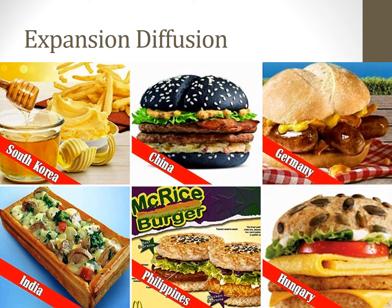McDonald's is a great example of stimulus diffusion. McDonald's continues to expand, but not every country has the same food preferences and there are cultural taboos to consider. So McDonald's makes cultural adaptations to their menu to meet local demands. McDonald's in India offers non-beef options to meet the cultural taboo against eating beef. McDonald's in Israel offers kosher restaurants. And that's just a couple of the many different menu examples we could look at for McDonald's.